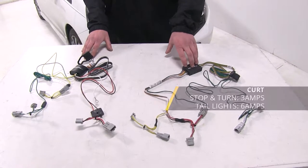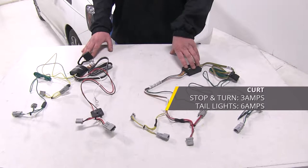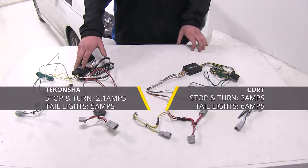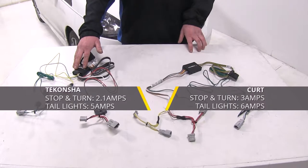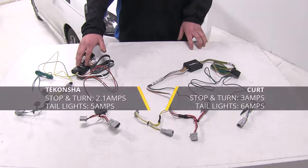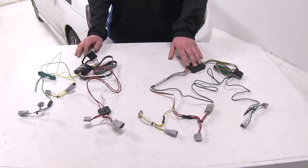However, the power rating for the Kurt is going to be rated at three amps for your stoplights and six amps for your taillights. While the Takantia's power rating is going to be 2.1 amps for the stoplights and five amps for the taillights. So you're going to get a little bit more power for your stop and turn signals on your Kurt harness here.